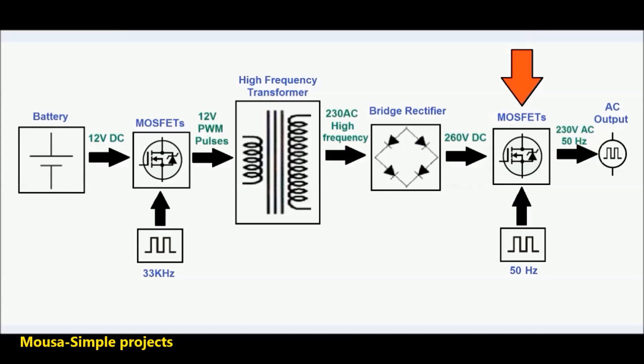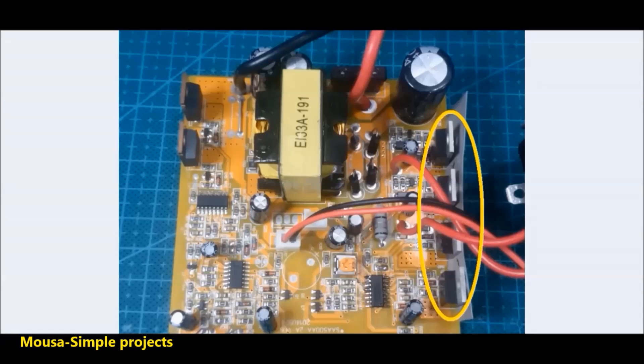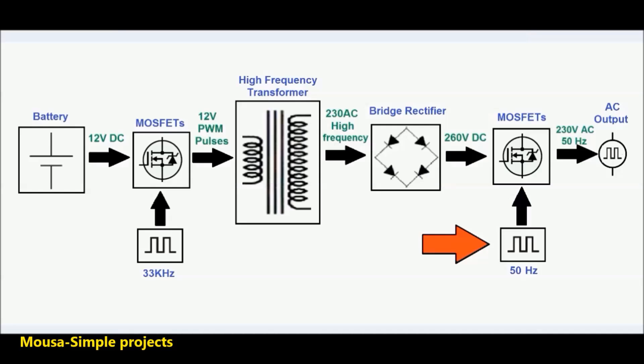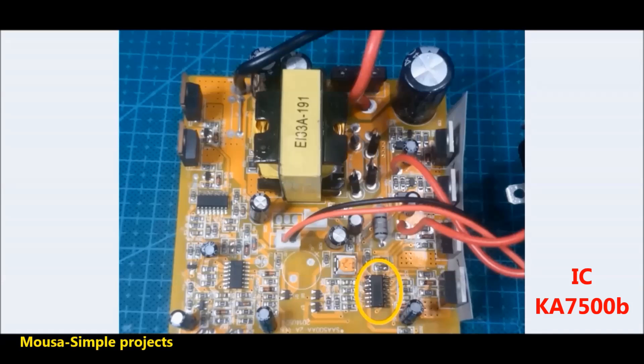Then these four MOSFETs switching by another PWM generator IC to convert the 260 volt DC to about 230 AC voltage with the frequency of 50 hertz.